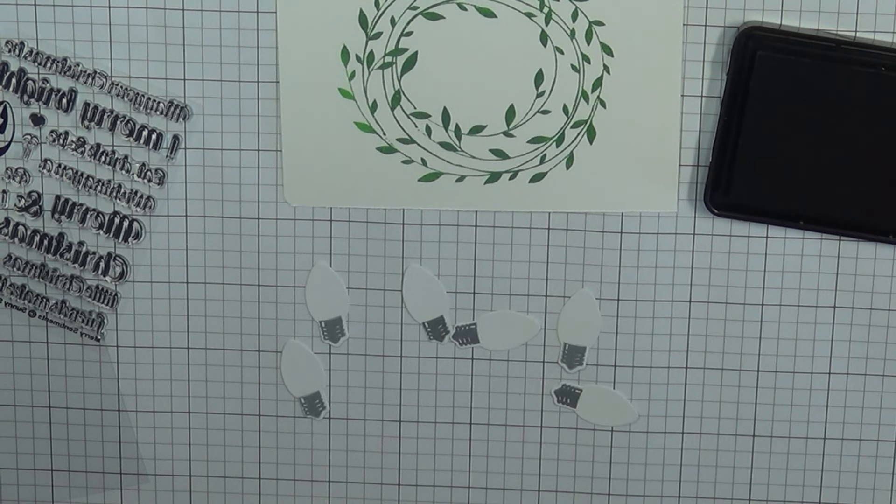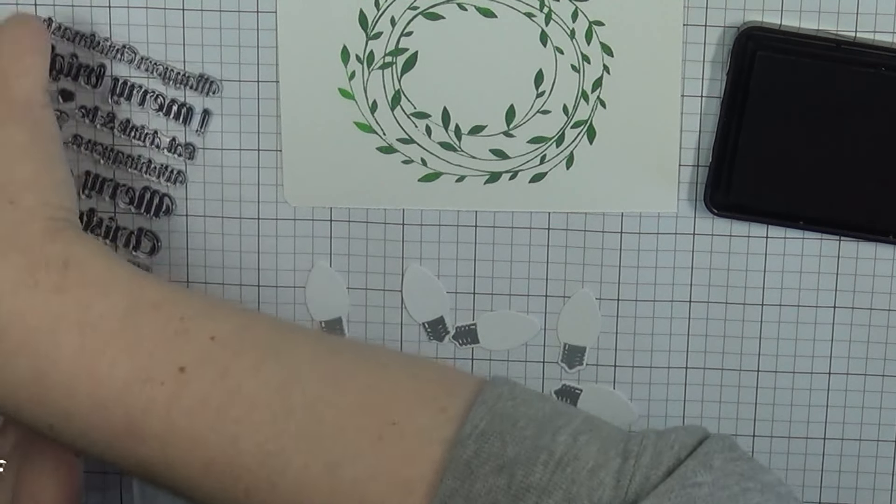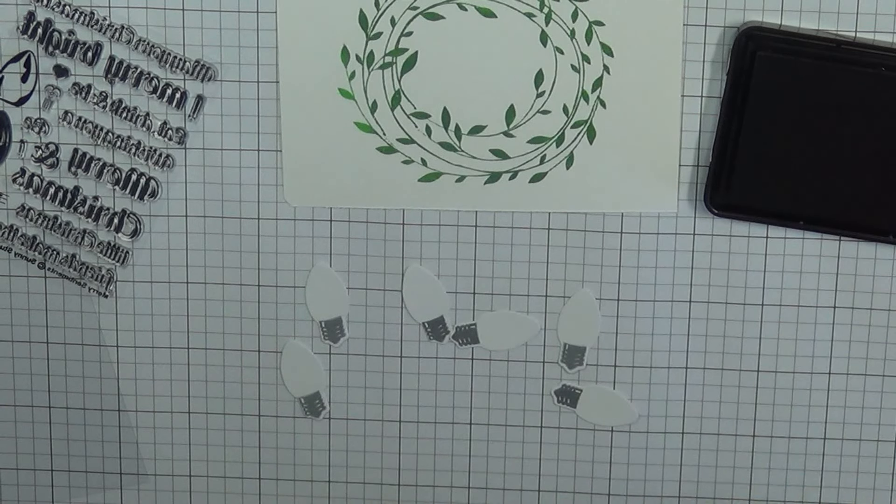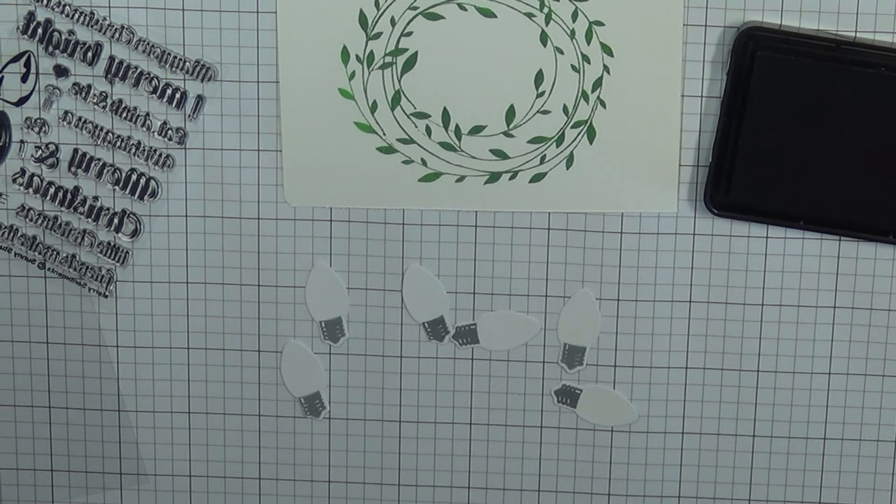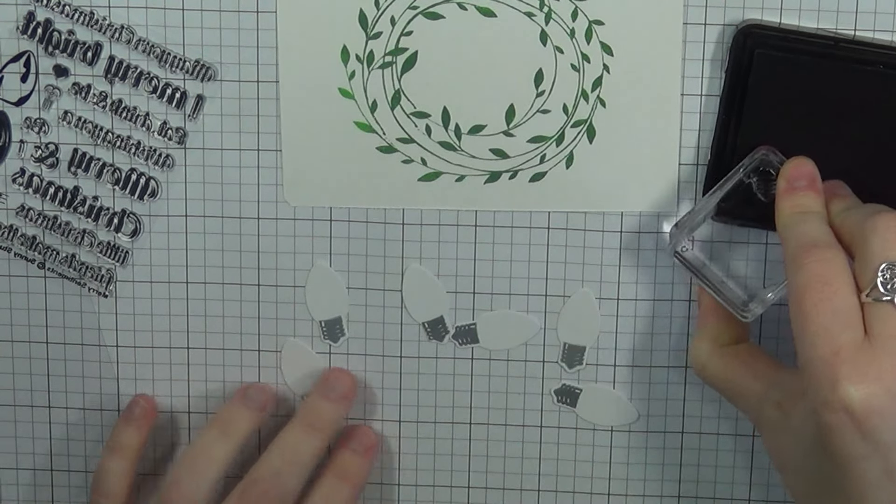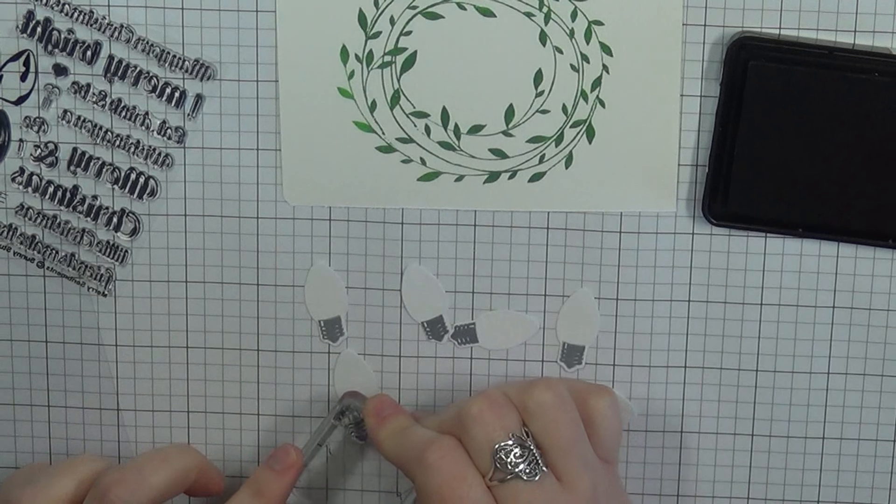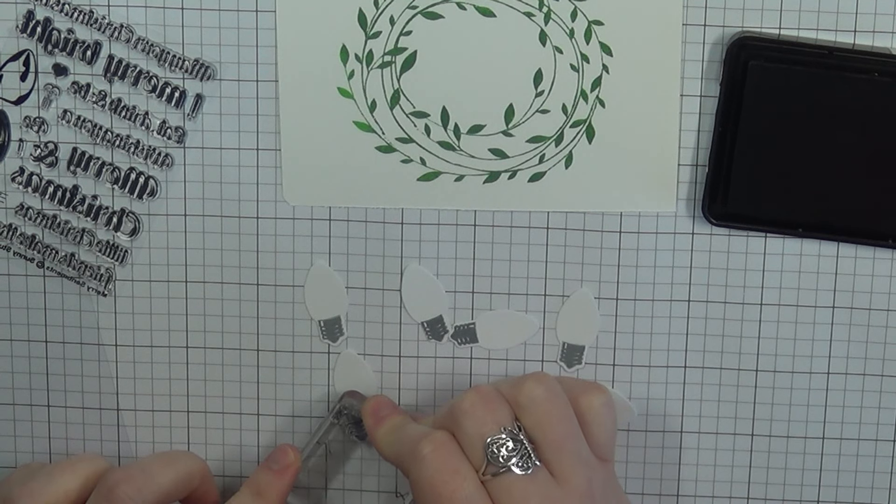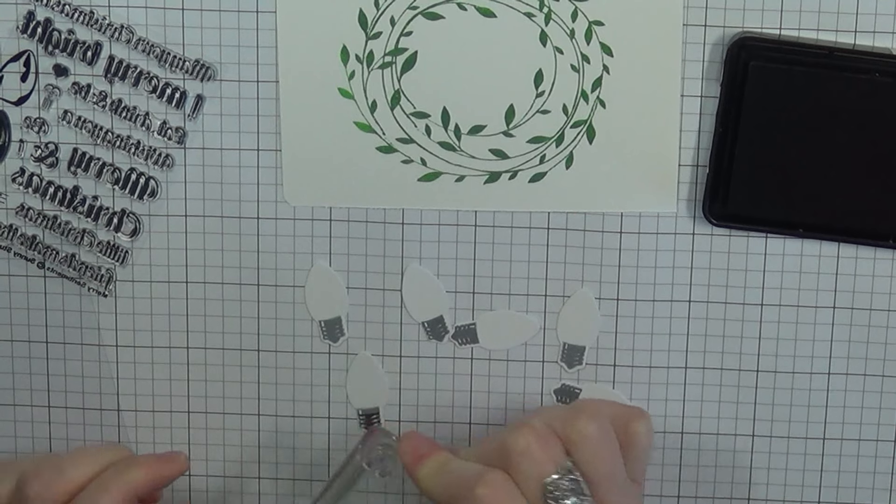So that's what I'm doing and I am first stamping down the bottom of the bulb. I'm using my Hippo ink from Lawn Fawn for that and then I'm taking my black ink here. This is Black Licorice also from Lawn Fawn.